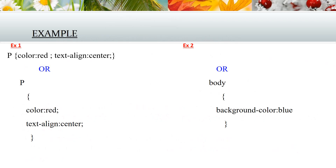From example 1: h1 is the selector. Color is a property and red is the property value, separated by a colon. Text-align is another property and center is the property value. In example 2, p is the selector — all p elements will be center-aligned with a red text color. In example 3, body is the selector; background-color is the property and blue is the property value, so the webpage will appear in blue color.